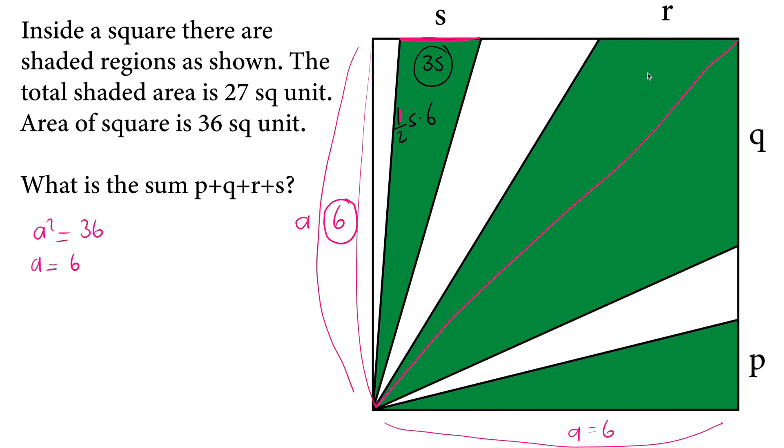So similarly, the area of this triangle, if I write the area formula, one half times the base, base is here R, R times 6 again. This 6 will act as a height. One half times R times 6, it will be 3R as the area of this triangle.